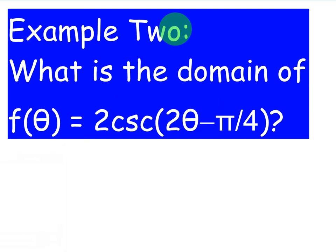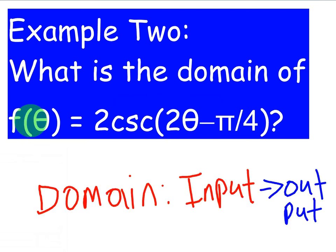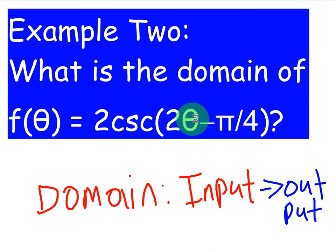Next up, we are going to find the domain of a cosecant function, doing the same steps as the previous example. The question is: what is the domain of f(θ) = 2csc(2θ - π/4)? We have to ask what numbers we can plug in to get an output. Domain is an input that yields an output, so we want to identify the set of angles we cannot plug in, and then everything else can be plugged in.